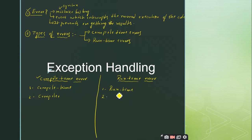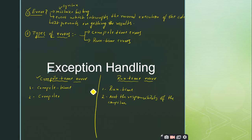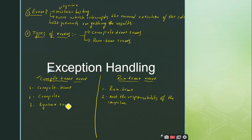In the case of runtime errors, since they occur after the compilation process, the compiler is not responsible for throwing them. Runtime errors are not the responsibility of the compiler. Can you give some examples of compile-time errors? Syntax errors — can anybody give me an example of a syntax error?